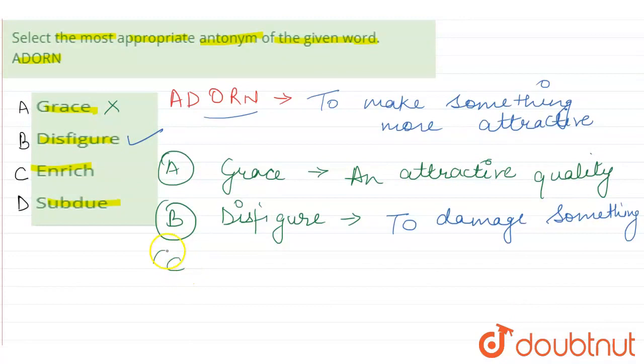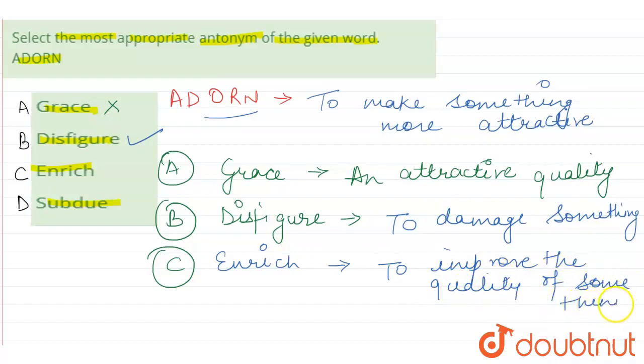C option is enrich. Enrich means to improve the quality of something. Enrich is not the opposite.